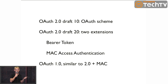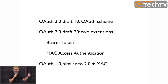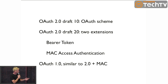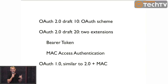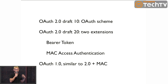MAC access authentication is an added measure of security you might want if you care about security and can't use HTTPS. If you can use HTTPS, it's not really an issue because everything is encrypted over the wire. OAuth 1 is very similar but only implements MAC access authentication, which makes it more complicated — if you've looked at an OAuth 1.0 client library, it's pretty big because it has to handle GET requests, POST requests, and all the encryption and signing.